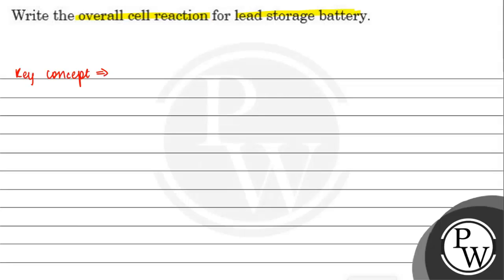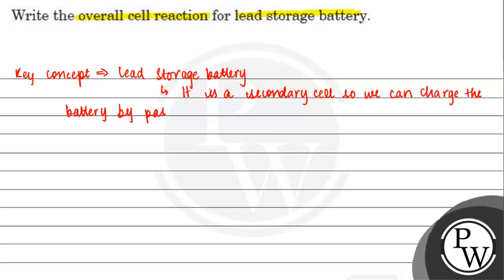First, let's see the key concept of this question. In the key concept, we will write what is a lead storage battery. Lead storage battery. It is a secondary cell. So we can charge the battery by passing current directly.